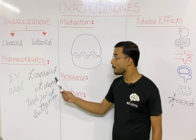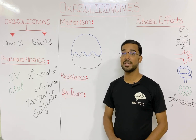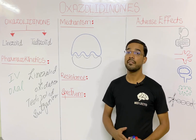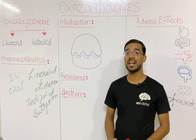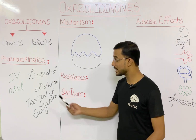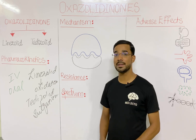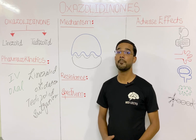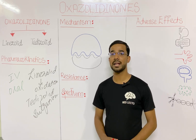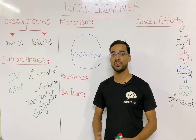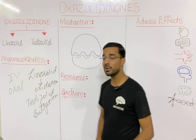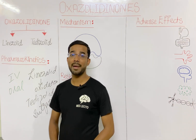Linezolid is excreted through both renal and non-renal routes, but tedizolid is excreted through the bile duct, meaning it is excreted in the feces.